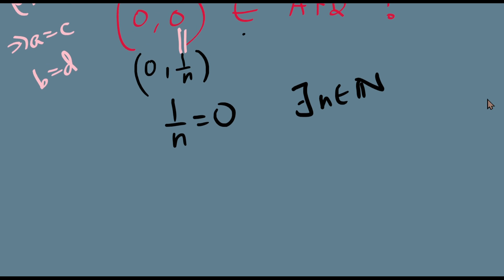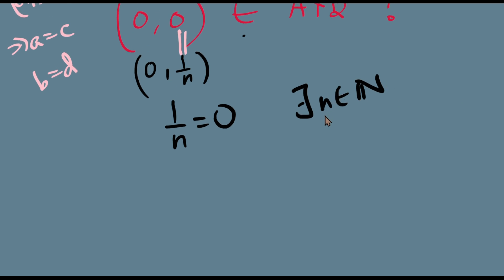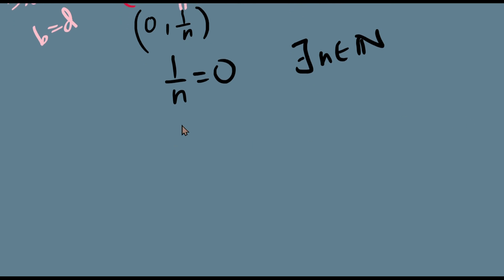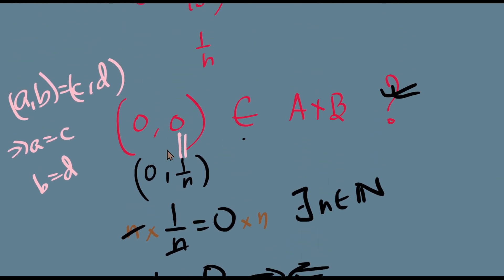This is the symbol for 'there exists'. These symbols have been discussed in our lessons at Maths Recoded in our reasonings playlist. So we have 1/n for some natural number n such that 1/n equals 0. Is it possible? We can multiply both sides by n because n is still positive, and this n cancels and we reach a contradiction: 1=0. So this is a contradiction. This shows that (0,0) can never belong to A cross B. This is a false statement.